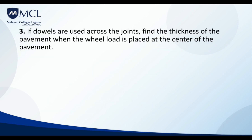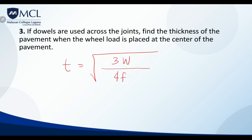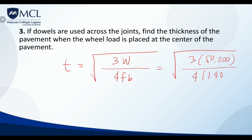For question 3, with dowels and wheel load at the center of the pavement, we use T = √(3W / 4FB). Substituting 3 times 50,000 over 4 times the bending stress gives a thickness of 163.66 mm.